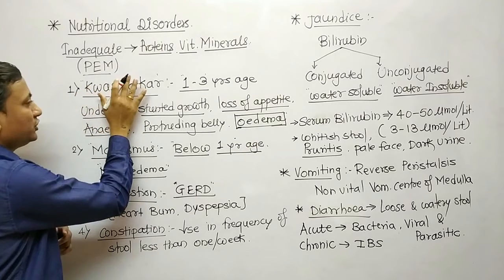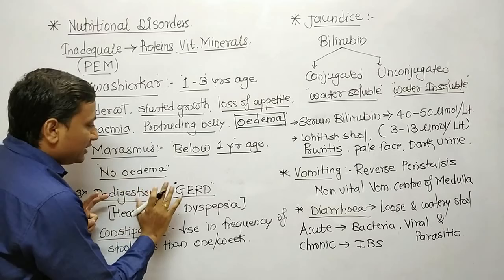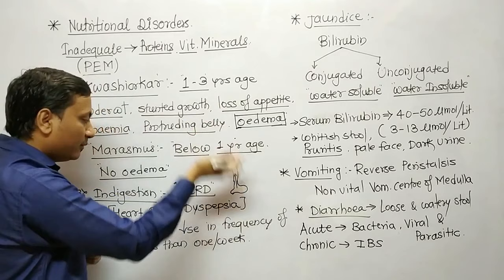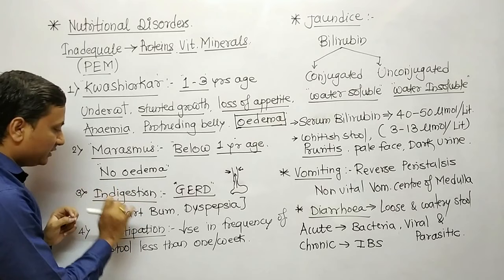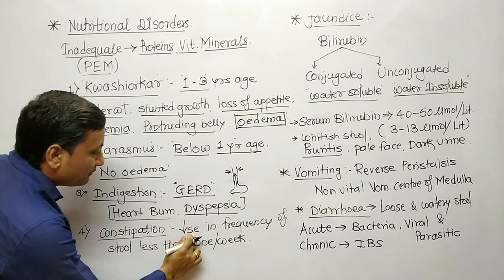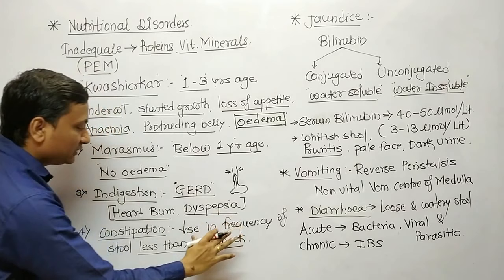The next nutritional disorder is indigestion. It refers to upper abdominal complaints suffered by a person. Indigestion is mainly caused due to GERD — gastroesophageal reflux disease — where there is reflux of stomach contents into the esophagus. Symptoms include heartburn and dyspepsia (increased secretion of acid). The next disorder is constipation, defined as a decrease in frequency of stool to less than once per week, caused due to low fiber intake in the diet.